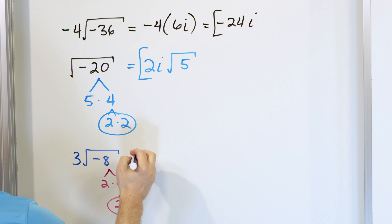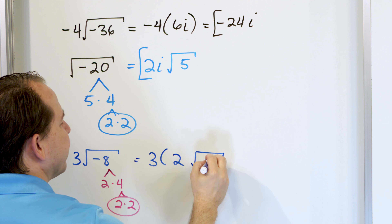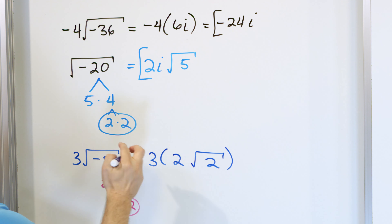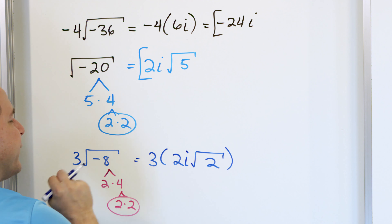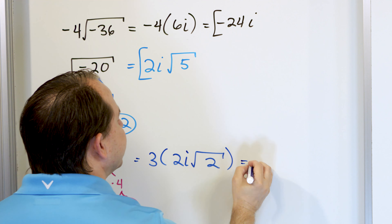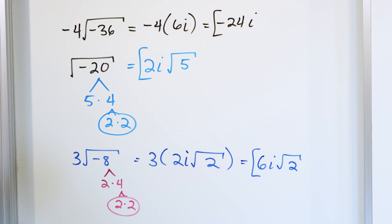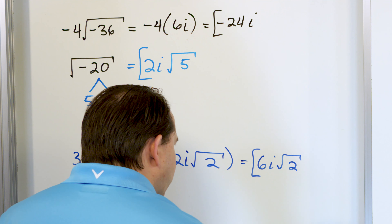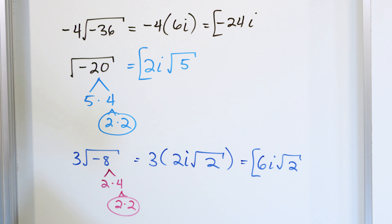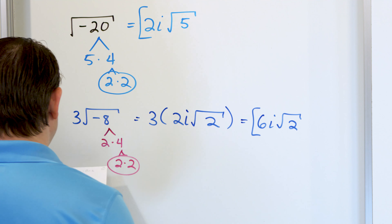What if we have the square root of negative 20? For more complicated ones that are not a perfect square, we do a factor tree — but do not try to write a factor tree with negative numbers. Just ignore the negative completely. 5 times 4 is 20, and 2 times 2 is 4. Circle the pair of 2's. A single 2 comes out, the square root of 5 is left over, and because we have the square root of negative 1, that also comes out as i. So we write 2i times the square root of 5.